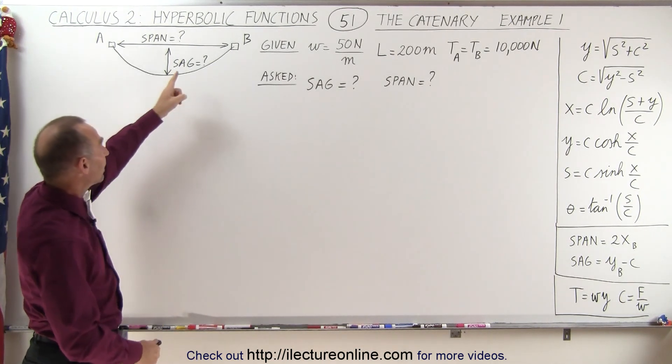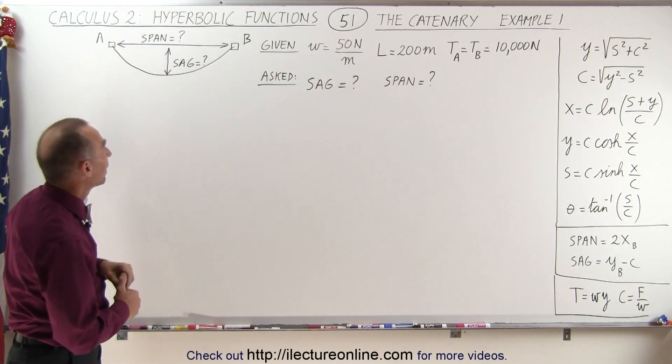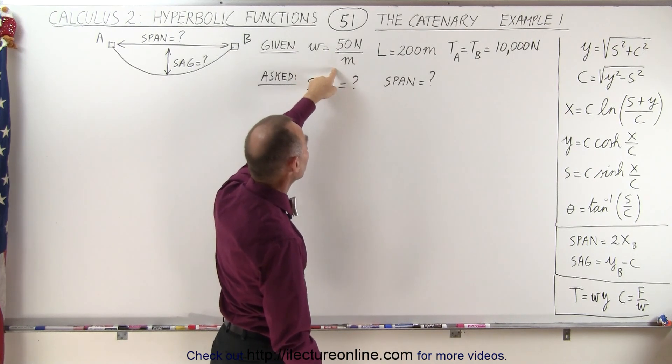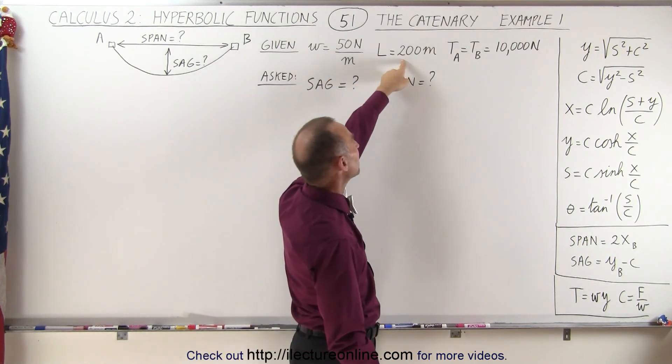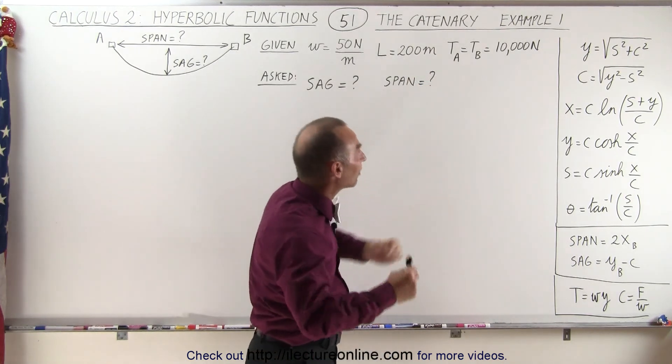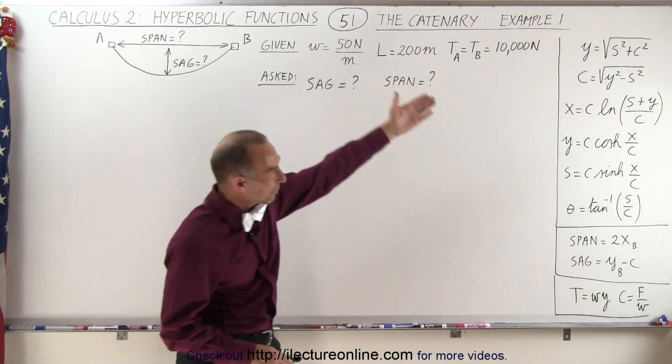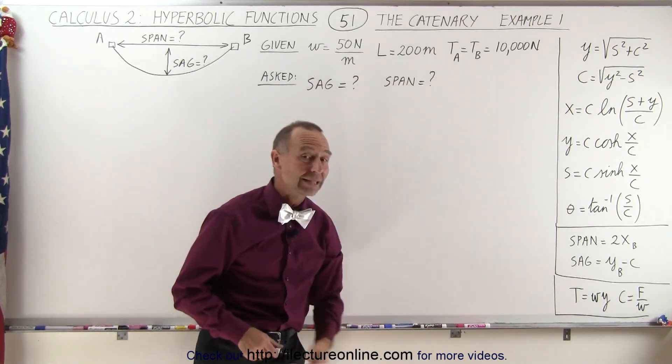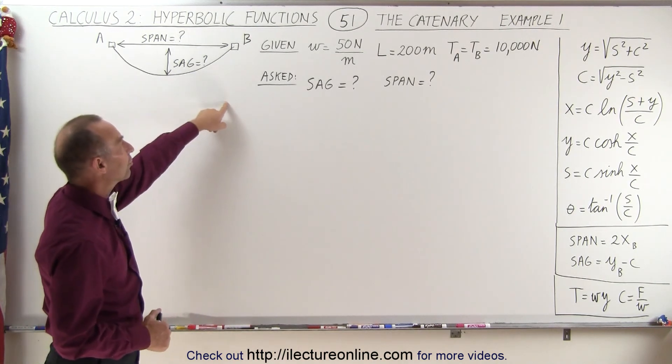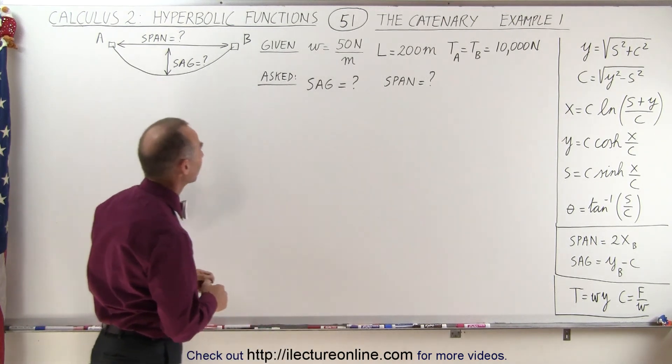Here we have a cable that's hanging between two posts or two supports A and B. We're given that the weight per unit length is 50 newtons per meter. The length of the cable is 200 meters and the tension at A and B, the tension at the end supports, is 10,000 newtons. To help us out we have all the equations we might need to use right there to the right of the board and they're asking us for the sag on the cable and the span distance, the distance between the two supports.